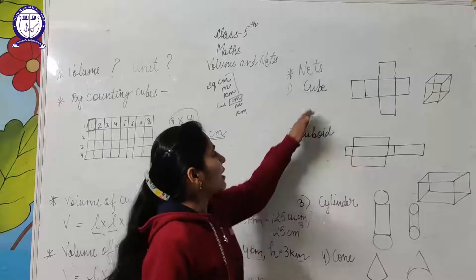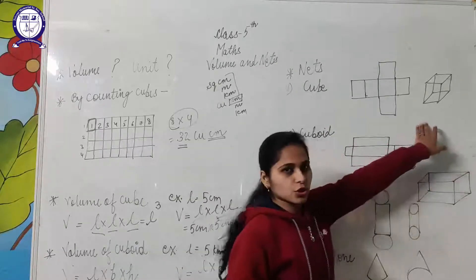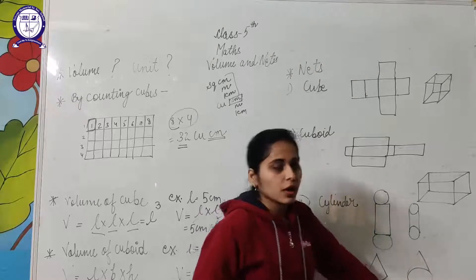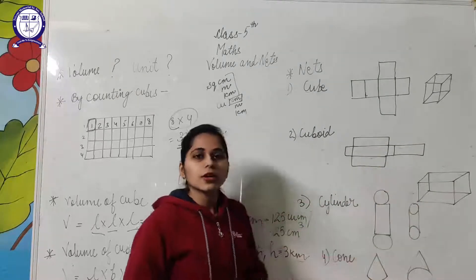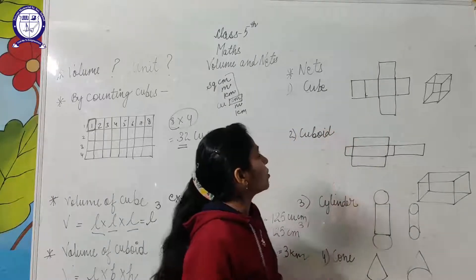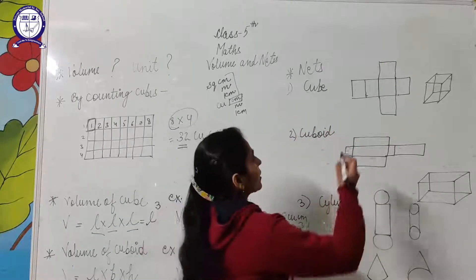As you are all aware, there's a closed cube, closed cuboid, closed cylinder, closed cone. You can also relate to your daily life examples. The net is the opening of that figure.